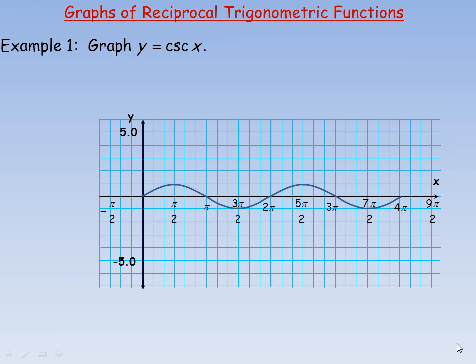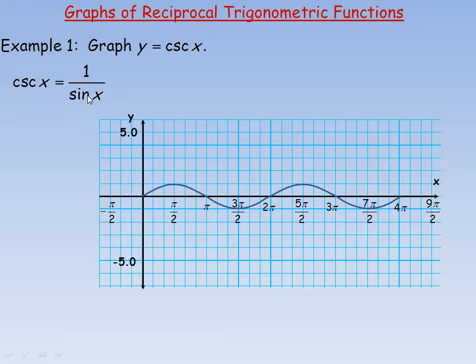In this lesson we're going to take a look at the graphs of the reciprocal trigonometric functions, and the first one we're going to do is cosecant. Cosecant and sine are reciprocals. Sine is called one of the basic trig functions and cosecant is its reciprocal, so cosecant x is 1 over sine x.